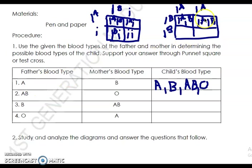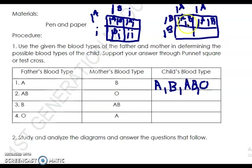For one possible combination: father type A uses IA IA, and mother type B uses IB IB. Either way, all offspring in this case are IA IB — meaning blood type AB. That is why we have AB.